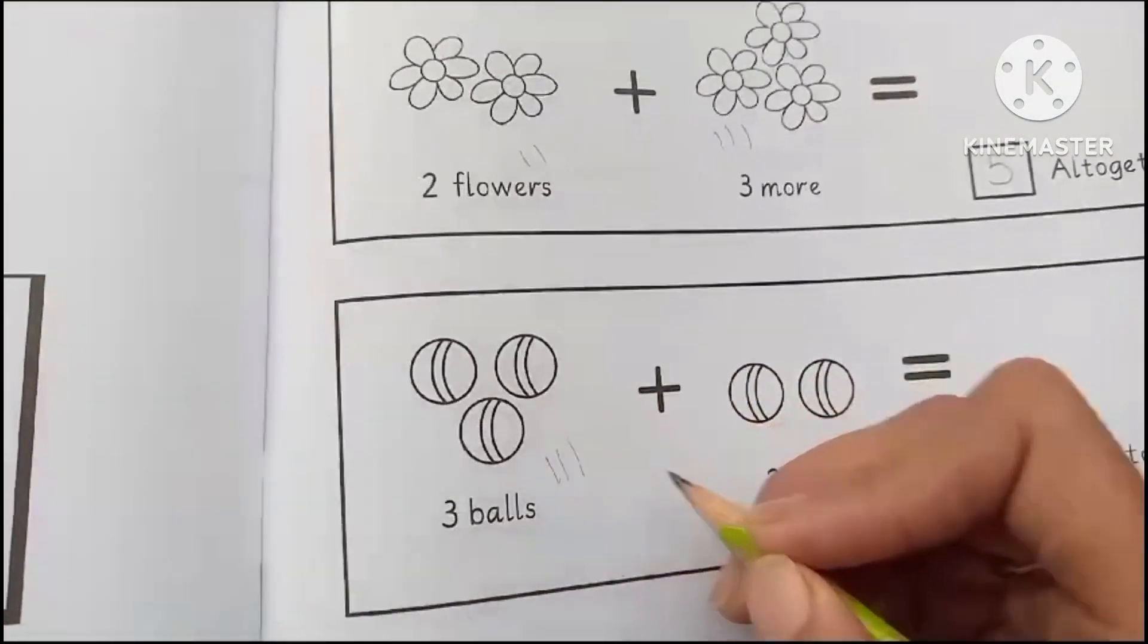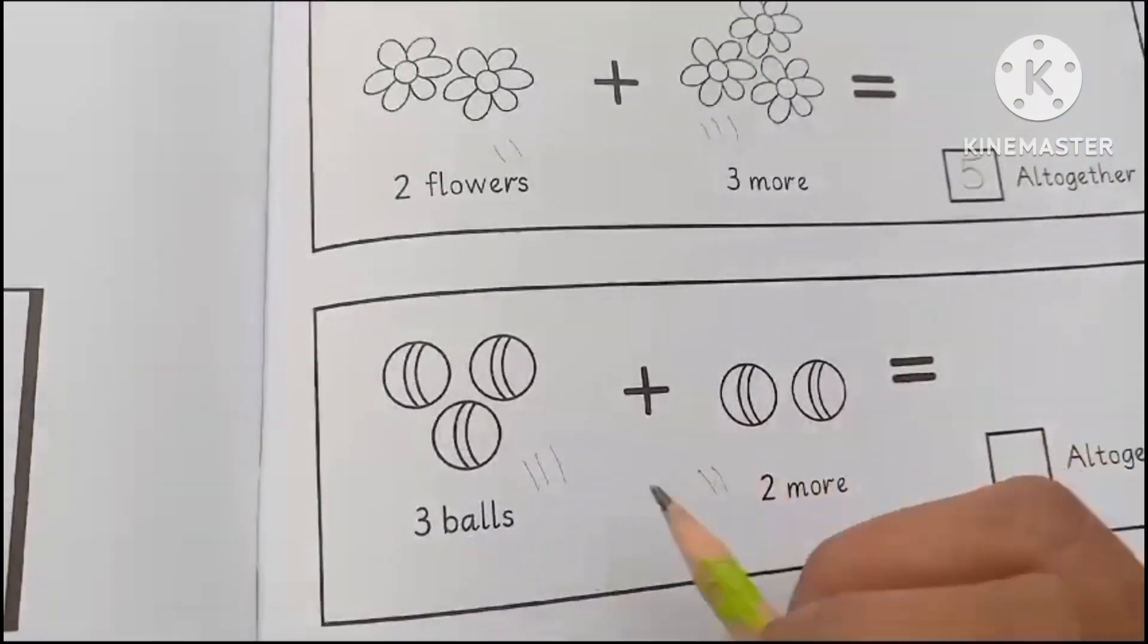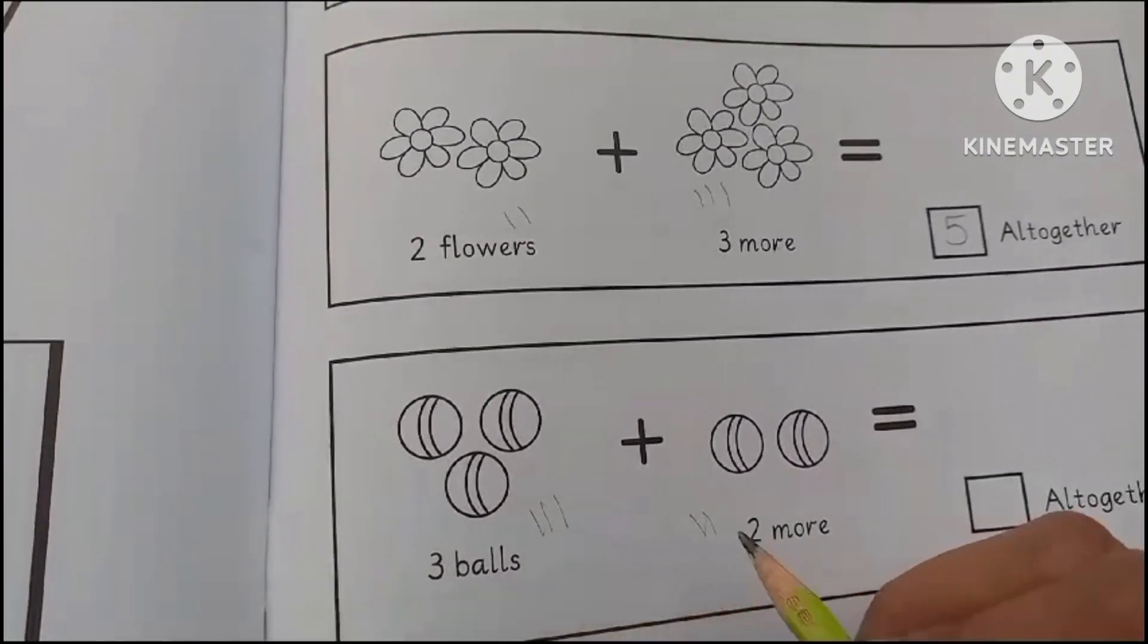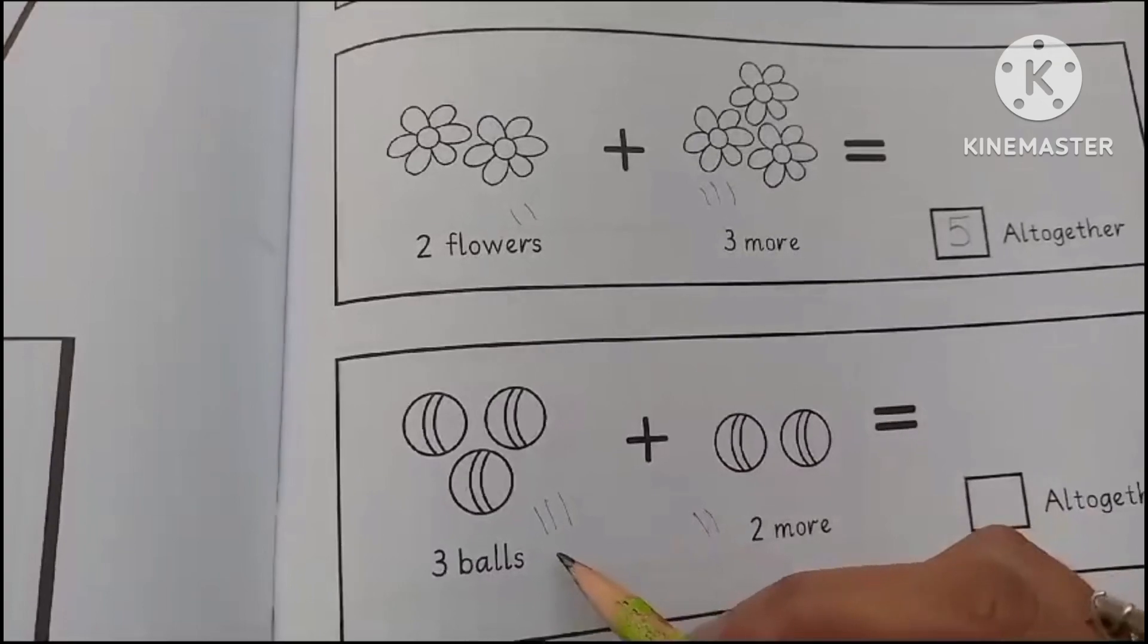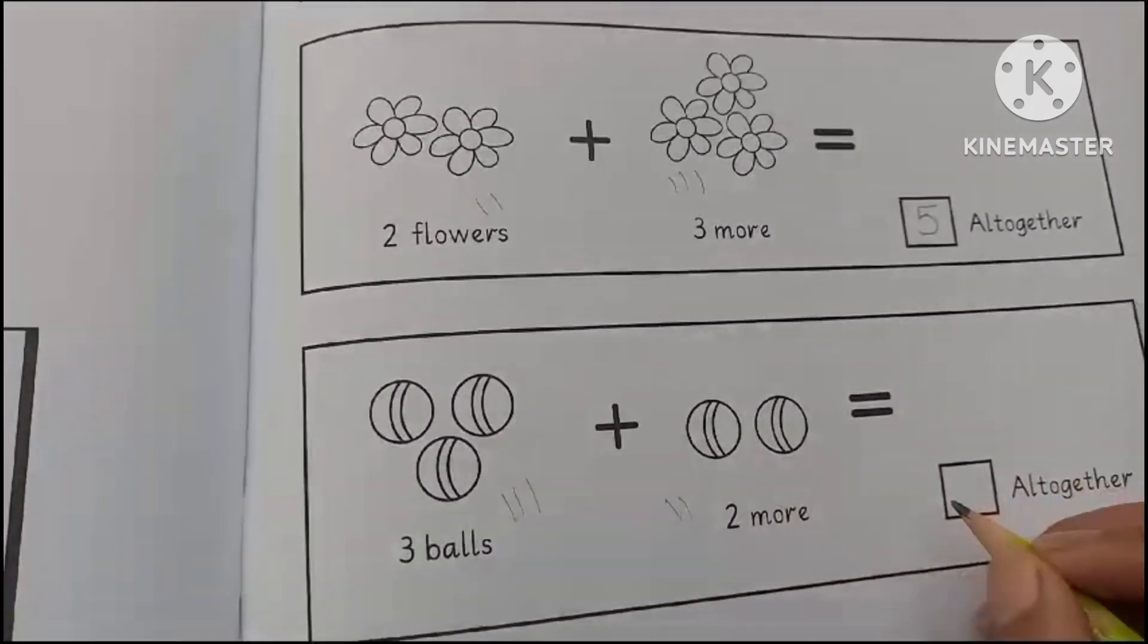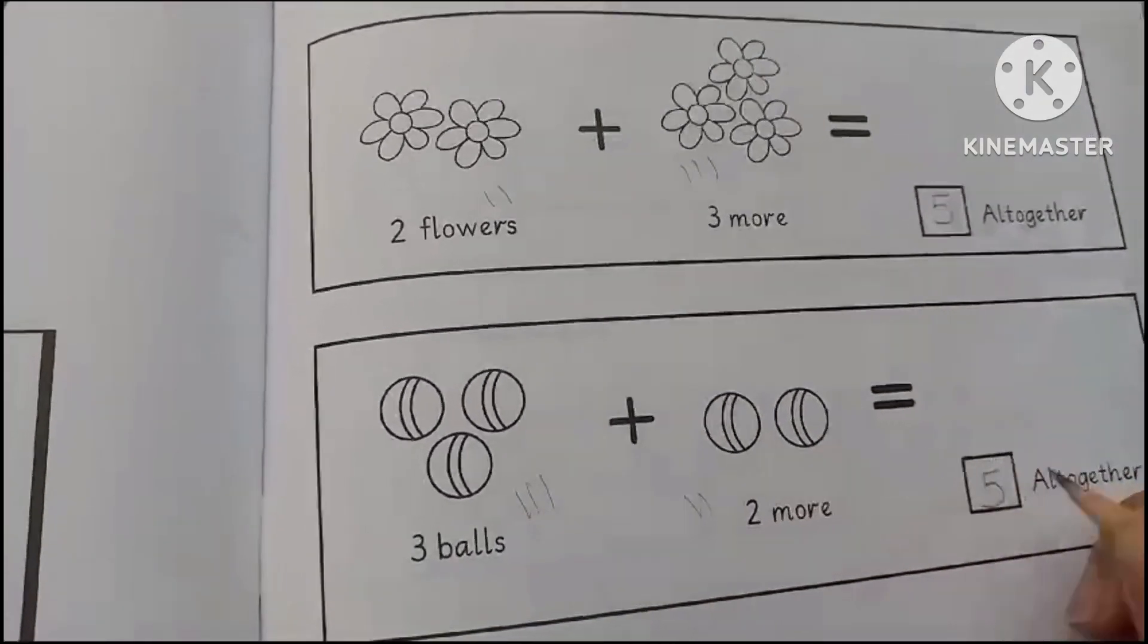3 balls and 2 balls. 1, 2, 3. 1, 2, 3. 1, 2, 3, 4, 5. There are also 5 balls.